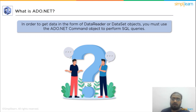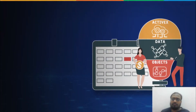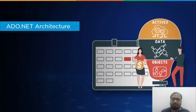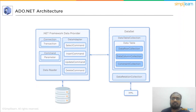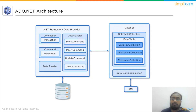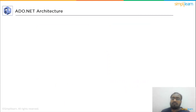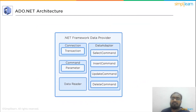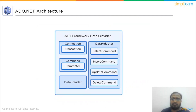Let's go over the ADO.NET architecture. An ADO.NET architecture comprises two parts: a data provider and a dataset. The data provider is then divided into four classes that interact with the database.